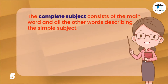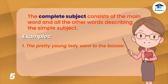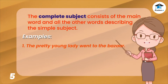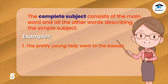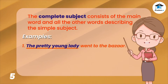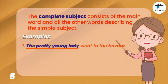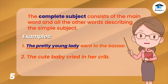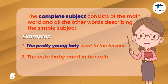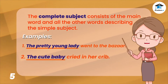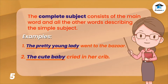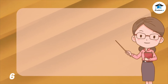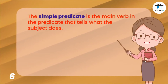The complete subject consists of the main word and all the other words describing the simple subject. Let's analyze these examples. One: 'The pretty young lady went to the bazaar.' In this sentence, the complete subject is 'the pretty young lady' — it has the simple subject 'lady' and all its modifiers. Two: 'The cute baby cried in her crib.' In this sentence, the complete subject is 'the cute baby.'